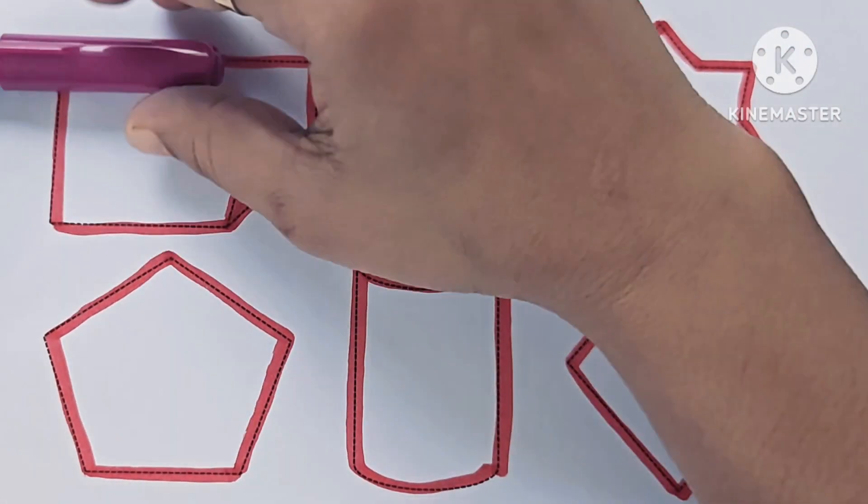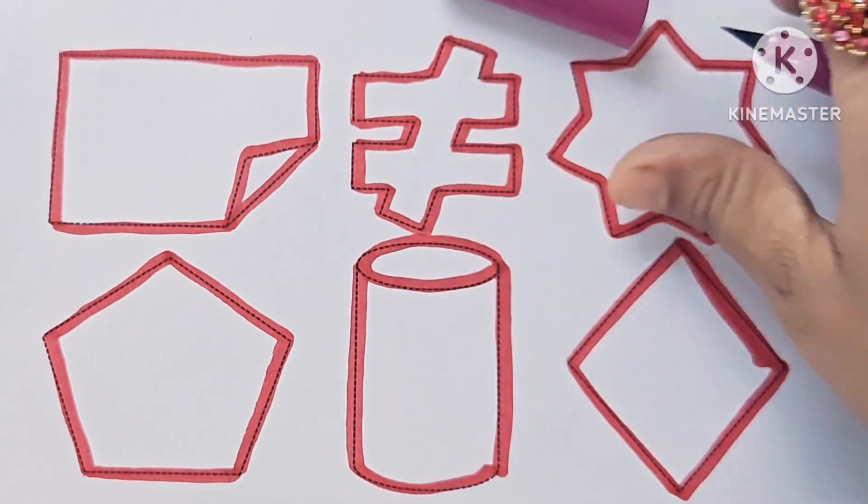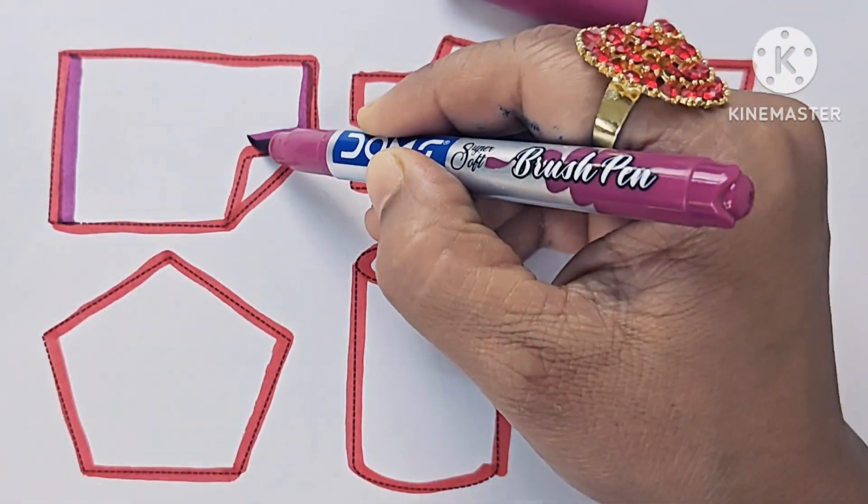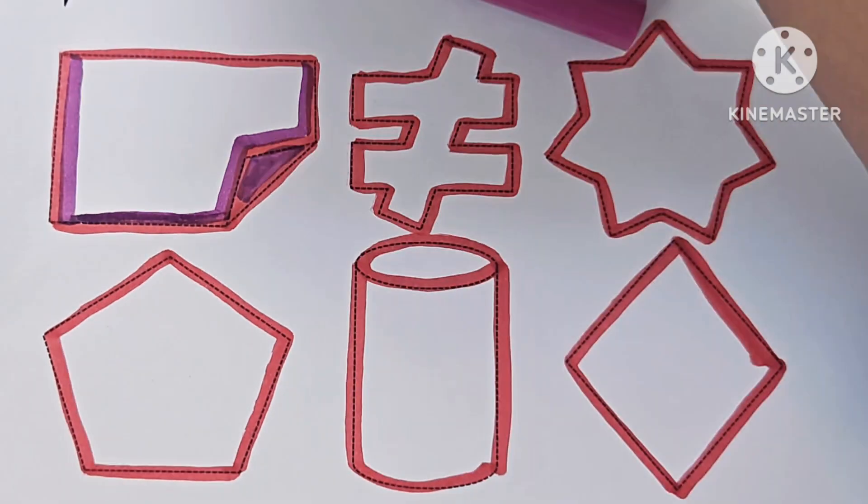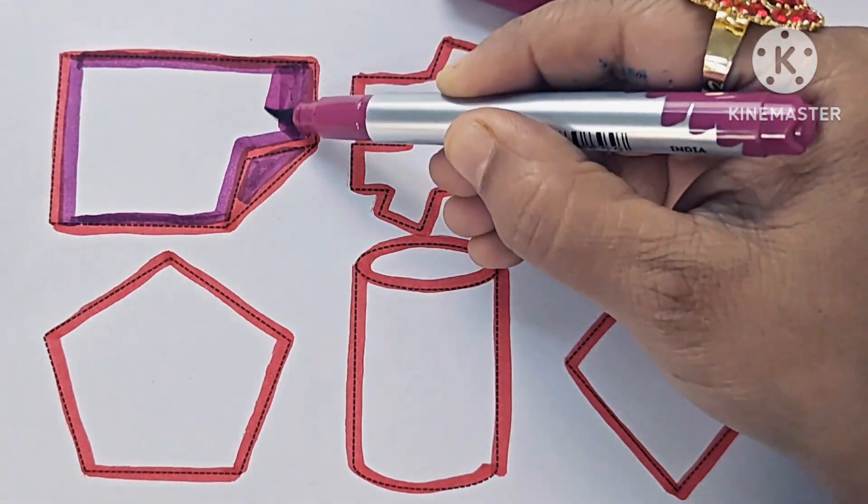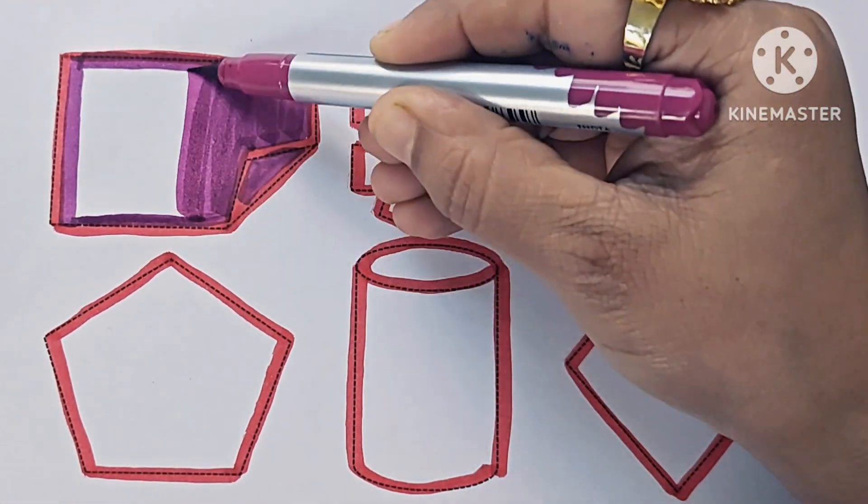Now let us color the shapes. Violet color, color center, black color.